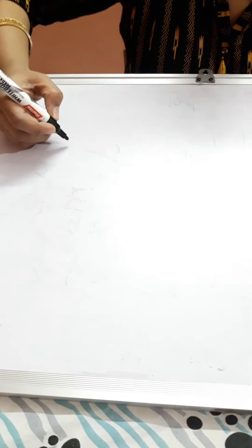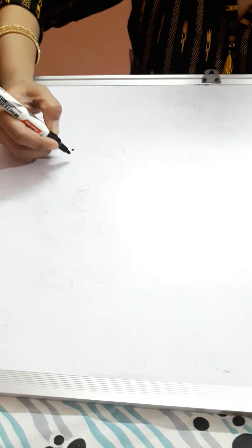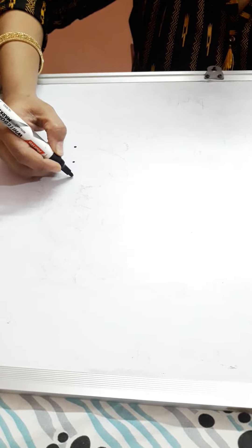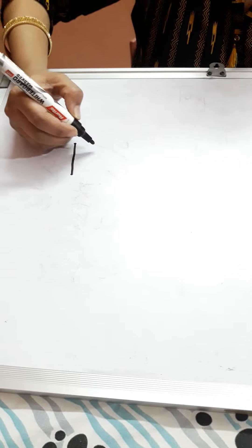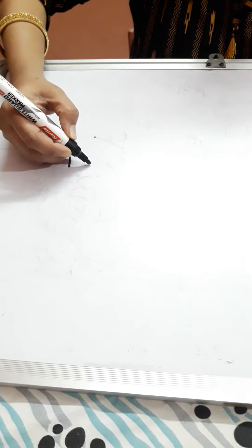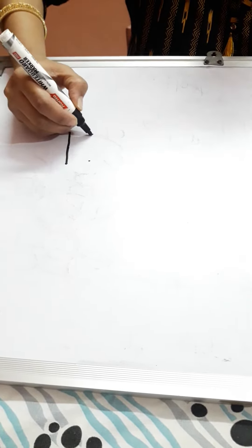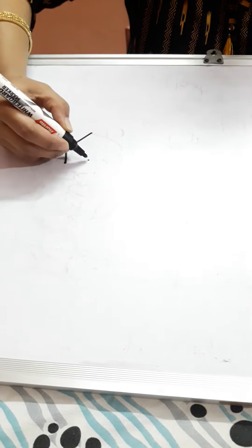Let's write letter K. Put three dots to make a standing line and two dots to make slanting lines.